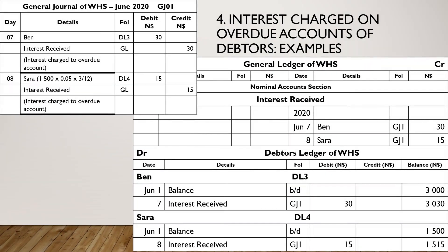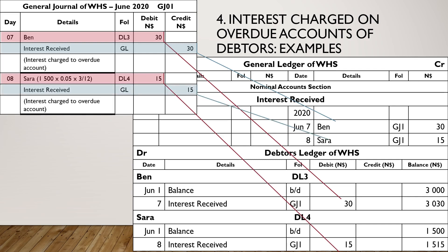Now let's look at posting of interest charged to overdue accounts of debtors. You debit the debtor's account where the details is Interest Received, and you credit Interest Received — the details is the debtor's account. One more example: we debit the debtor's account, in this case Sarah, the details is Interest Received, and we credit Interest Received with the details of the debtor's name, Sarah.